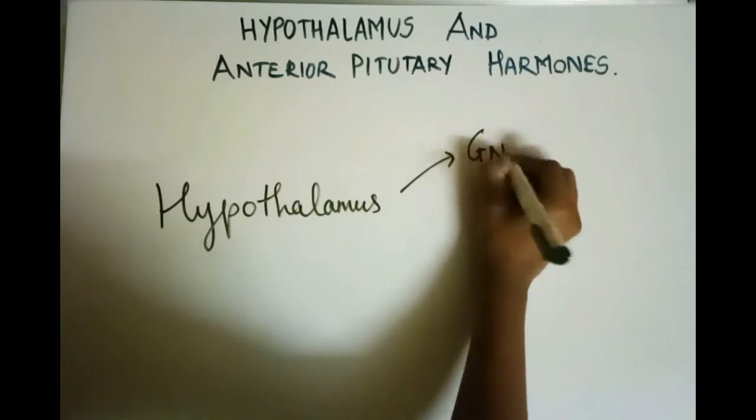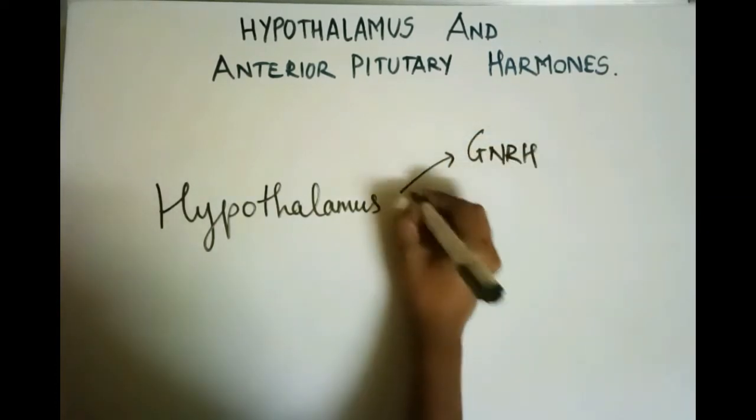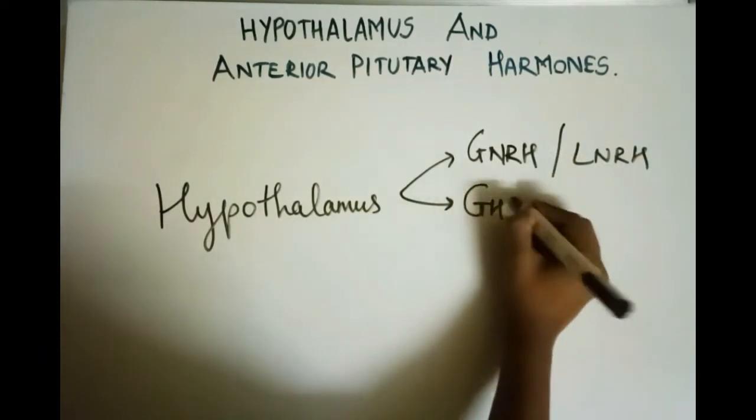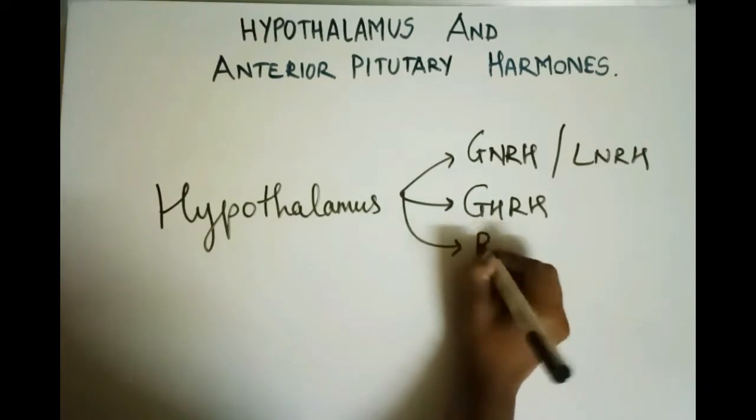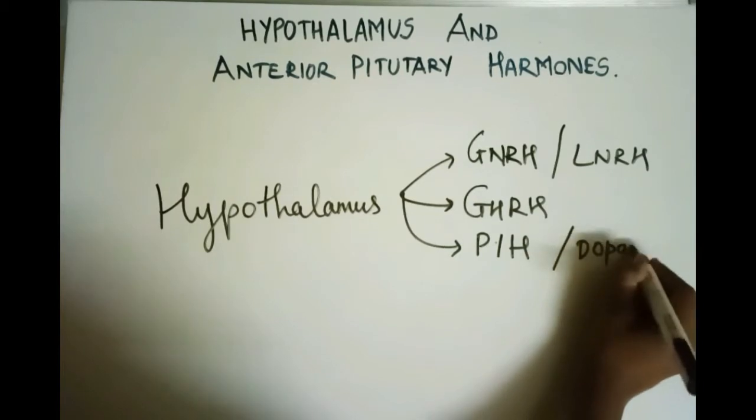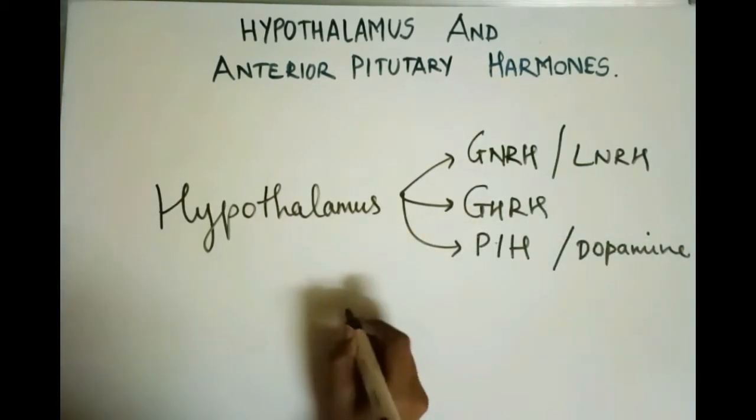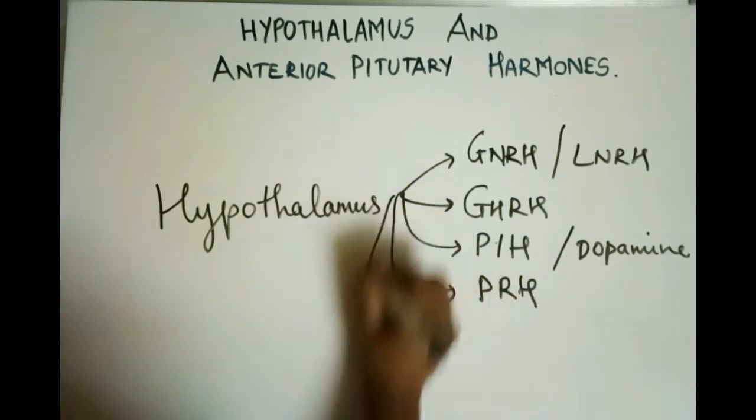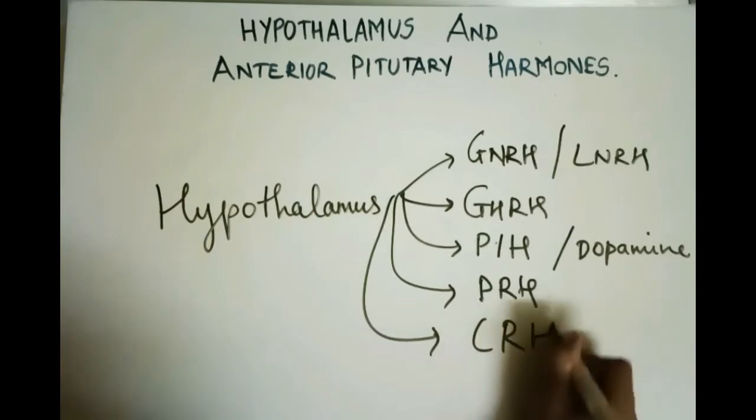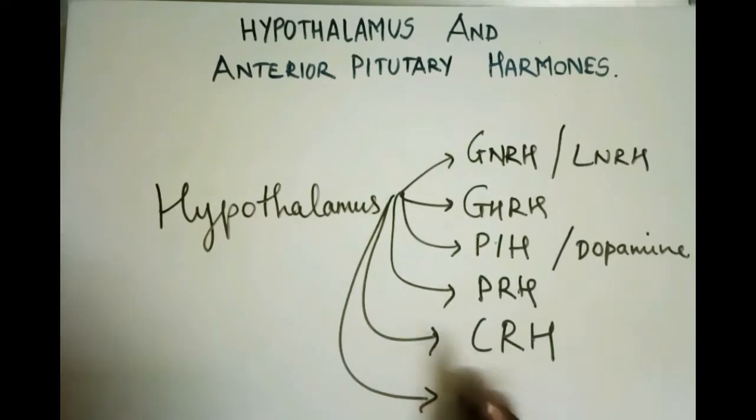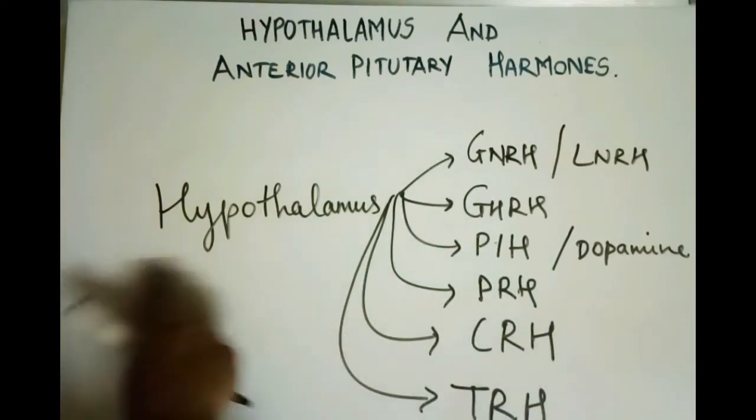So the first hormone is gonadotropin releasing hormone which is also written as LNRH. Second is growth hormone releasing hormone. Third is prolactin inhibiting hormone which is also known as dopamine. Fourth is prolactin releasing hormone. Fifth is corticotropin releasing hormone. Sixth is thyroid releasing hormone. So all these hormones are released from hypothalamus.